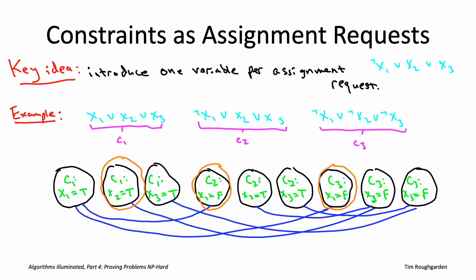Now, a satisfying truth assignment can be easily extracted from any independent set — any subset of non-conflicting vertices — if that subset contains at least one vertex in each group. For example, consider the second, fourth, and seventh vertices, which correspond to requests to set x1 to false and x2 to true. Any truth assignment consistent with those requests will satisfy all of the clauses, because this independent set has at least one vertex from each of the three groups.